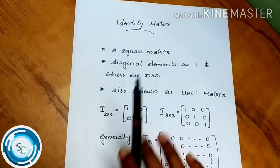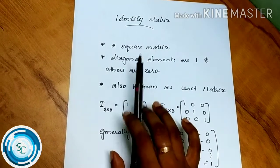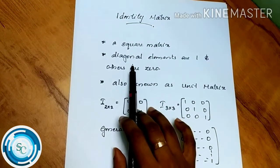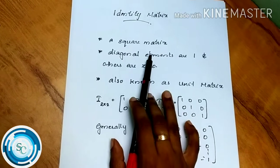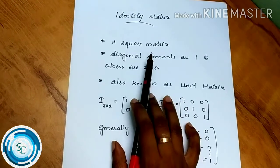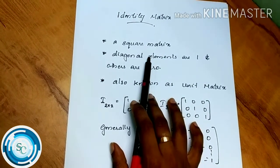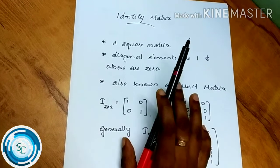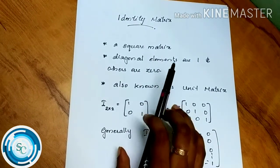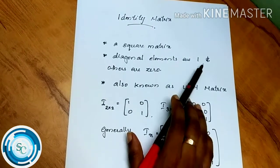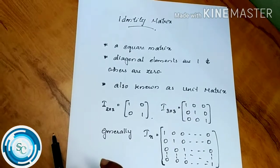An identity matrix is a square matrix. The number of rows is equal to the number of columns. The diagonal elements are all 1, and the other elements are zero.